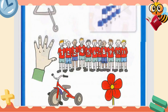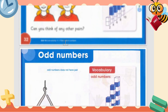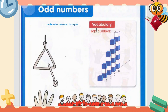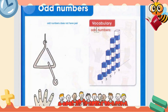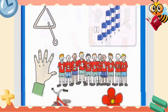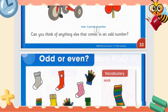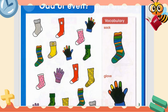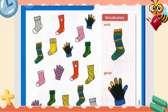So what are even numbers? Everything that is in a pair is known as an even number. And anything that doesn't have a pair is known as an odd number. Now let's look at the exercise. You need to identify whether each thing is odd or even.